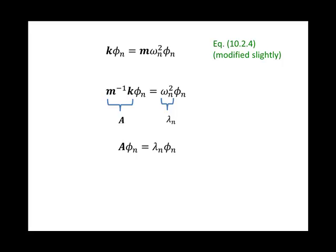This equation is so common that names have been given to different parts. λₙ is called the eigenvalue, and φₙ is called the eigenvector. The eigenvectors and eigenvalues are properties of matrix A. That is, given a square matrix A, you can find the eigenvectors and eigenvalues.